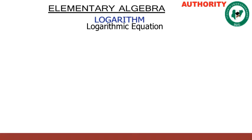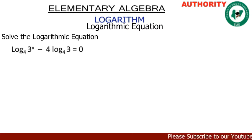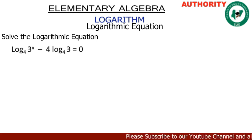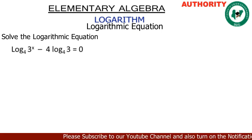Let's continue with a logarithmic equation. We are asked to solve: log of 3 raised to power x, base 4, minus 4 times log of 3 base 4, equals 0.